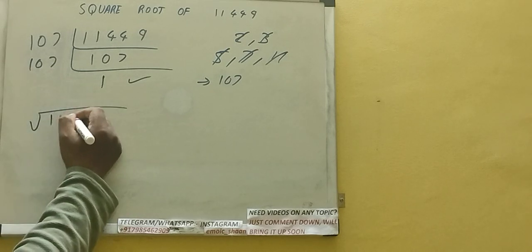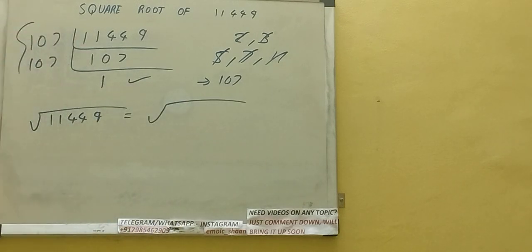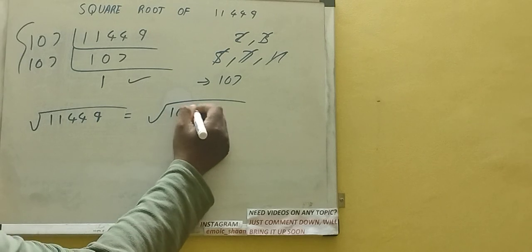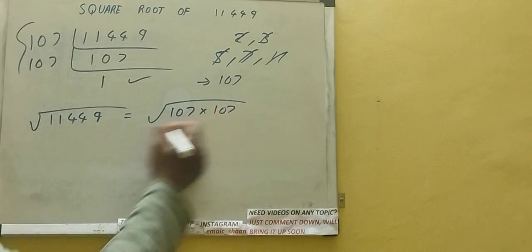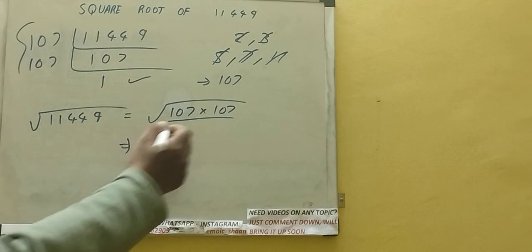That is, the square root of the number 11449 would be the square root of the number whatever we have on the left-hand side, that is 107 into 107. Now make a pair of two of the same number and write it once.